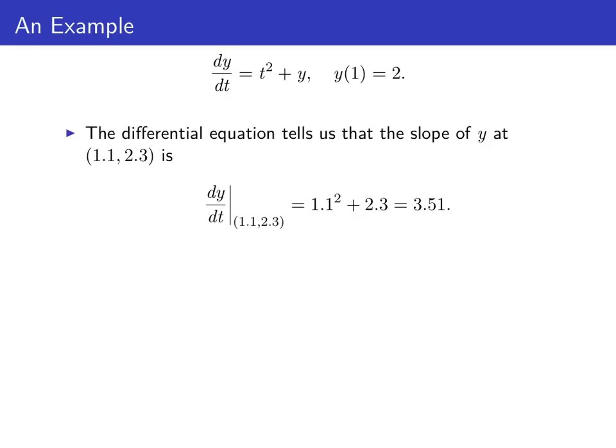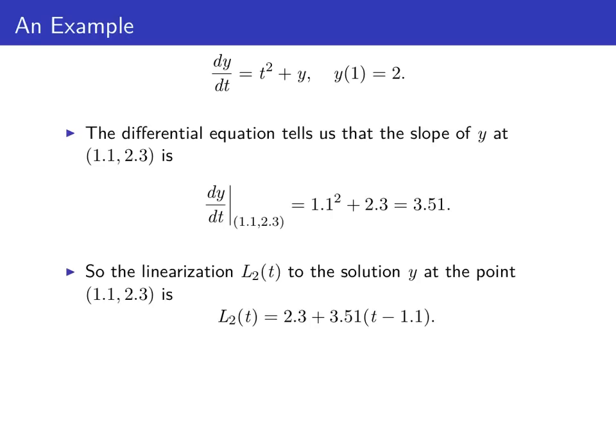Just like last time, to find the slope of our solution at the point (1.1, 2.3), we evaluate our derivative given by the differential equation, using 1.1 for t and 2.3 for y. So dy/dt at (1.1, 2.3) is 3.51. That makes the linearization L₂(t) to our solution at the point (1.1, 2.3) equal to 2.3, the old y value, plus 3.51, the slope, times (t − 1.1), the change in t.